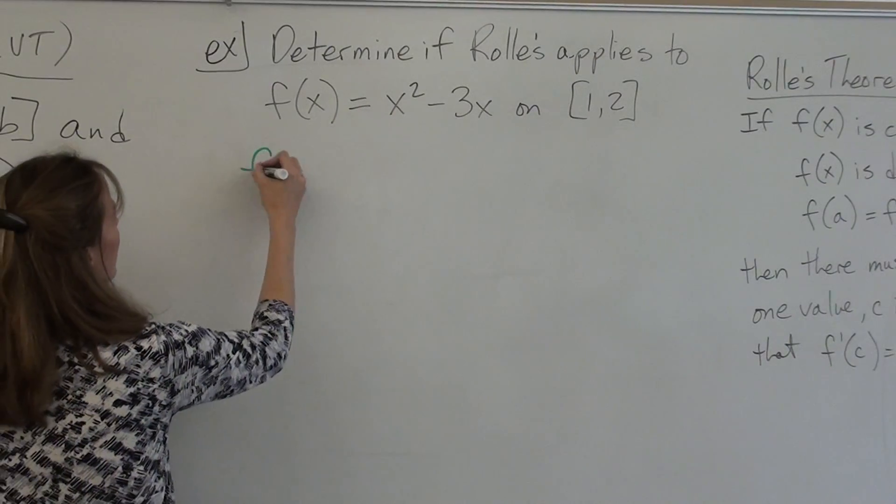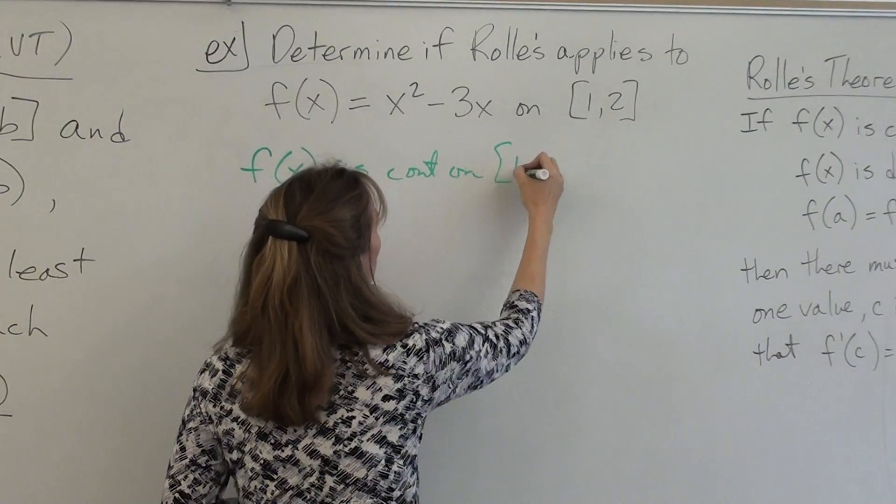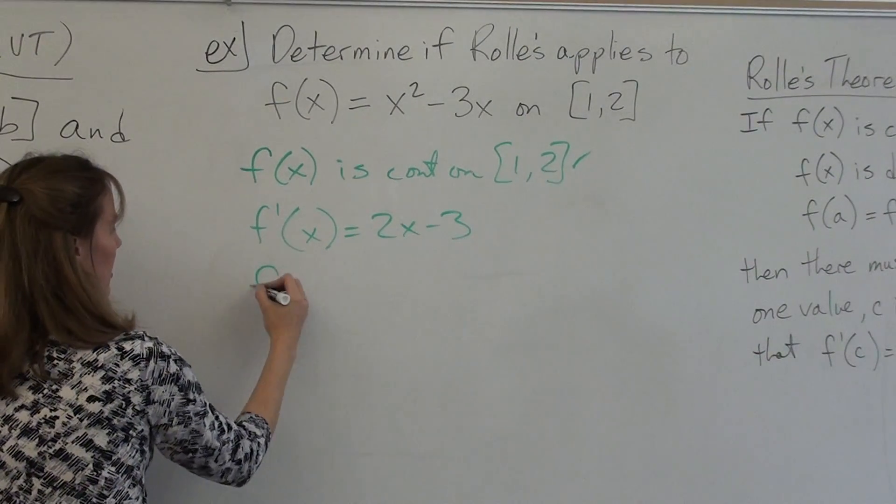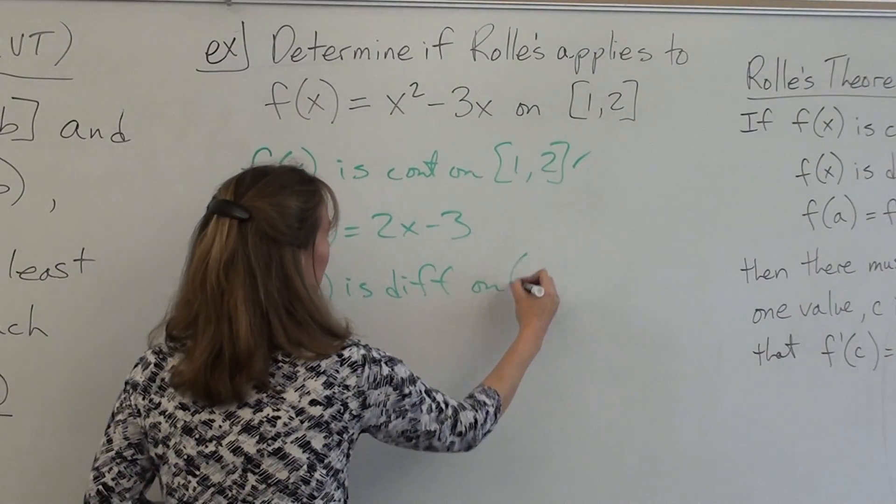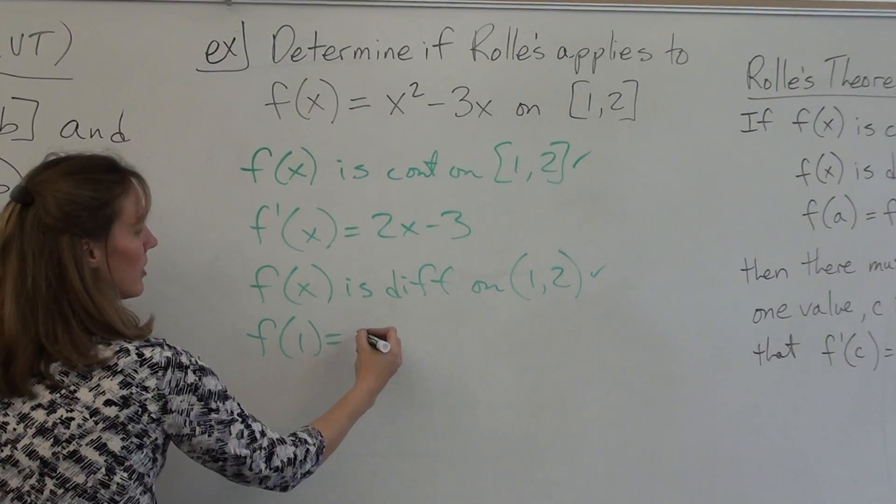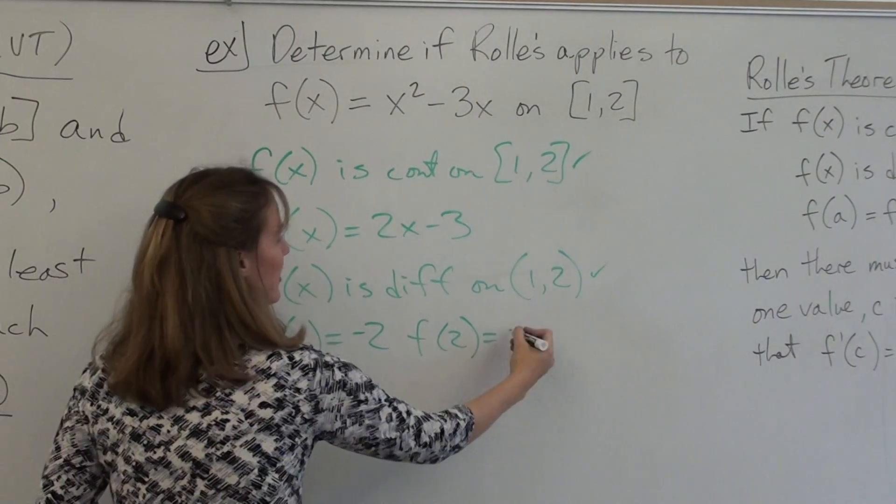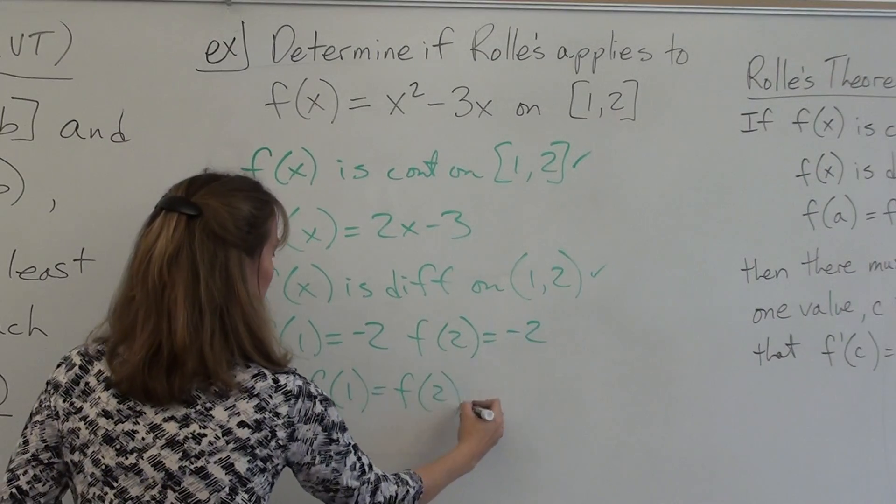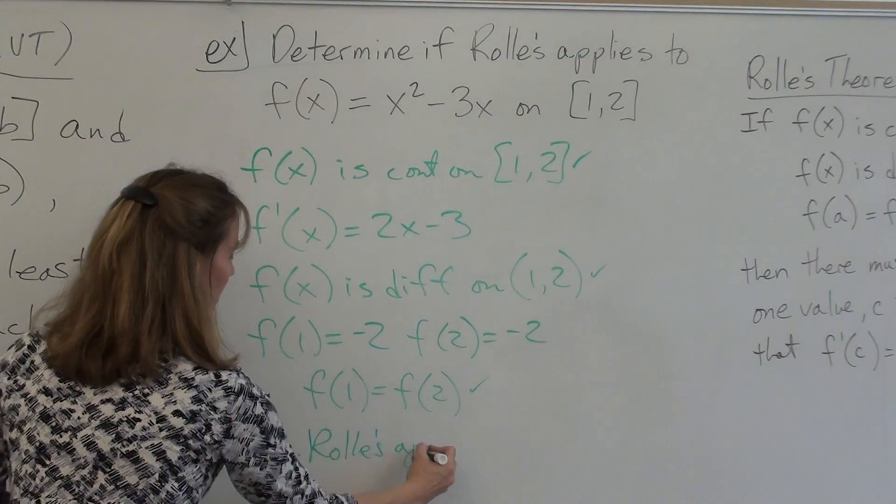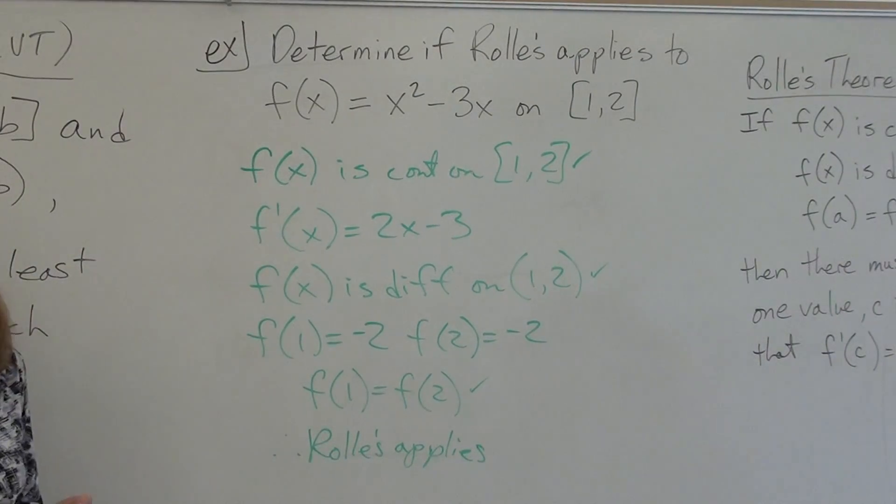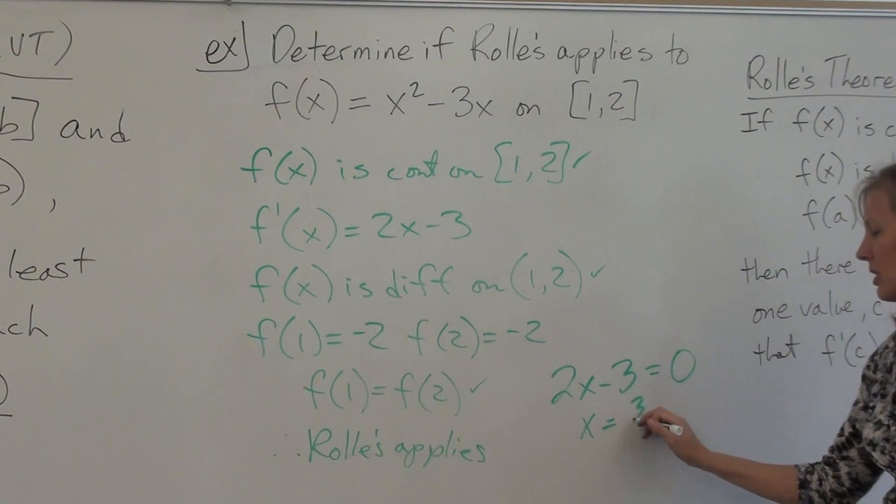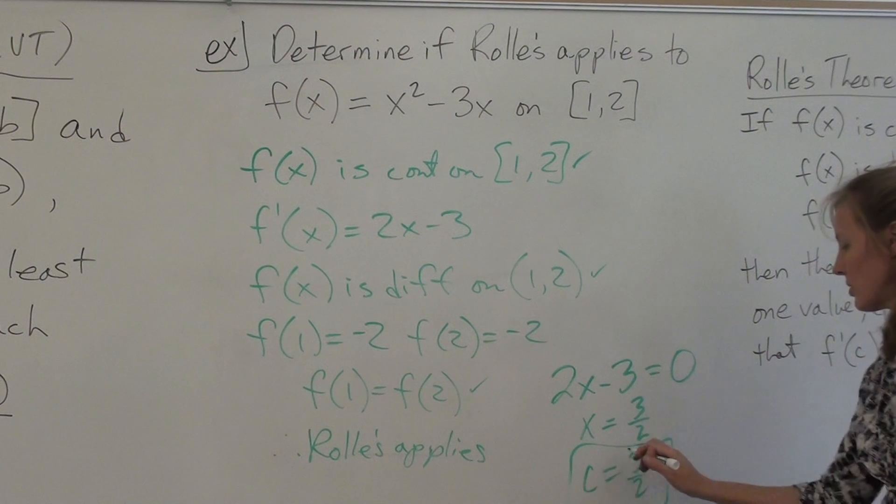Is function continuous? Yes. Then write that down. F(x) is continuous on the closed interval [1,2]. What's the derivative? 2x - 3. Is the derivative continuous? That means that the function is differentiable on the open interval (1,2), check. F(1) is -2. F(2) is -2. Therefore, f(1) equals f(2), check. Three checks means Rolle's applies. To apply it, all you have to do is set the derivative equal to zero. X happens to be 3/2, which is also our C. Thank goodness it's in the interval, so we are good.